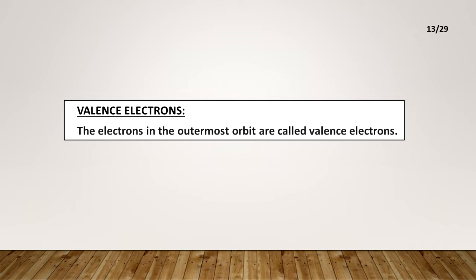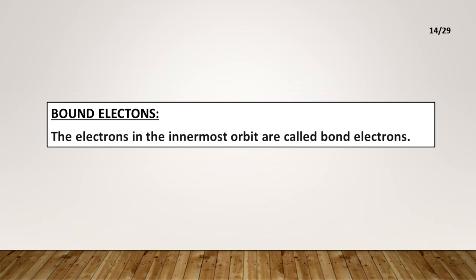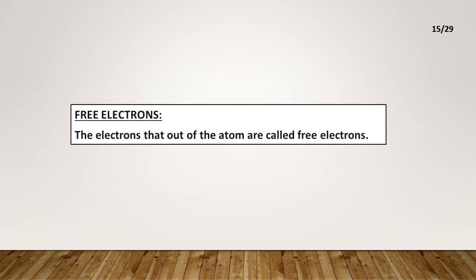Valence electrons: The electrons in the outermost orbit are called valence electrons. Bound electrons: The electrons in the innermost orbit are called bound electrons. Free electrons: The electrons that are out of the atom are called free electrons.